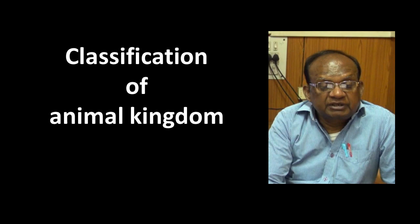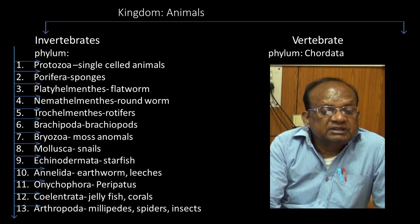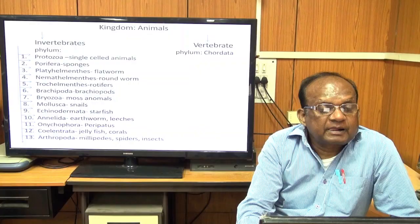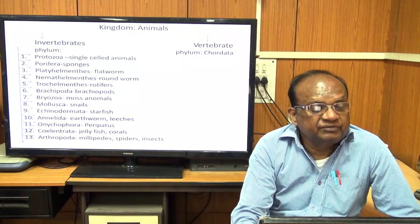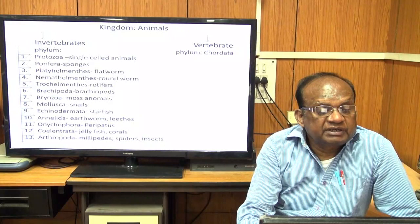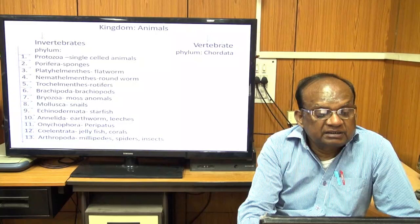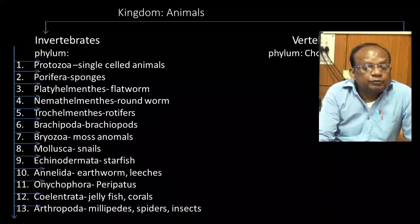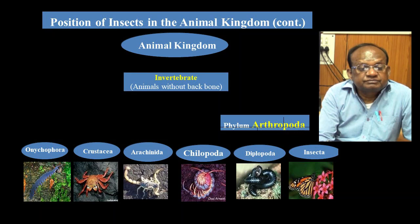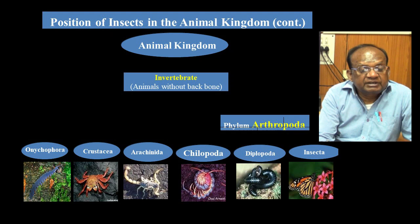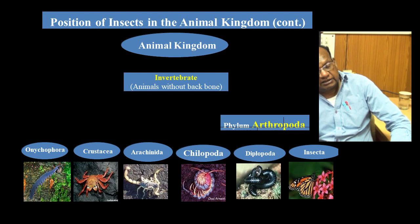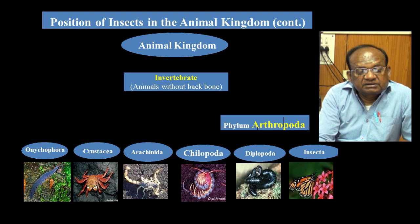The next issue is the classification of the animal kingdom. The animal kingdom can be divided into invertebrates and vertebrates. In invertebrates, many phyla exist including Protozoa, Porifera, Platyhelminthes, Nematihelminthes, Trochohelminthes, Brachiopoda, Bryozoa, Mollusca, Echinodermata, Annelida, Onycophora, and Arthropoda. We will study the phylum Arthropoda in depth, particularly the class Insecta (Hexapoda).